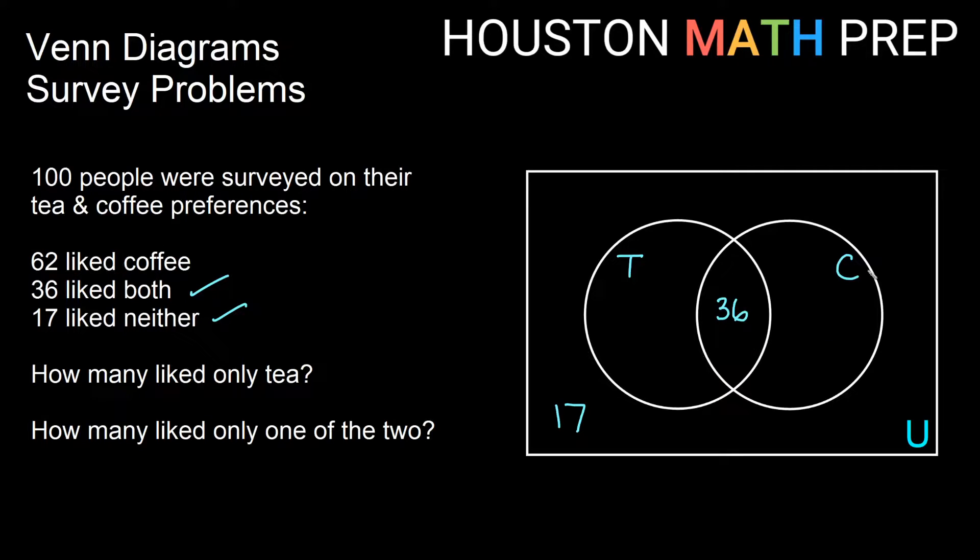62 liked coffee. Now if I look at my coffee circle, I need a total of 62 in my coffee circle, in my C circle. And I already know that 36 go here. So what this tells me is that 36 plus some other number is supposed to give me 62 total in the coffee circle. And if we figure out 36 plus something equals 62, in other words, take 62 and subtract the 36 that are in here, then that's going to give me that I need 26 in this C circle, but not in the intersection here.